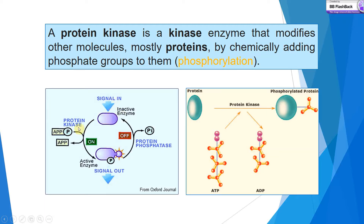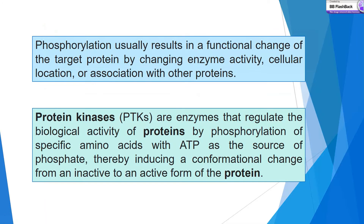When signal is in, in the presence of protein kinase, ATP's triphosphate gives one phosphate group to the protein and activates the enzyme. When protein phosphatase is present, one free phosphate group is removed and the enzyme becomes inactive again. Phosphorylation usually results in a functional change of the target protein by changing enzyme activity, cellular location, or association with other proteins, inducing a conformational change from an inactive to active form.